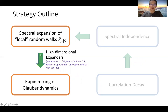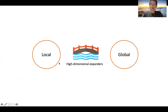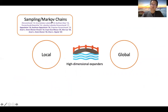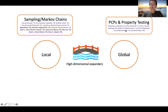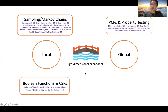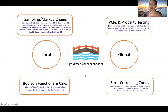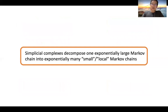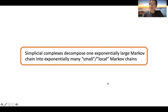High-dimensional expanders are objects exhibiting a local-to-global property useful for algorithm design and analysis: for analyzing Markov chains, sampling algorithms, PCPs, property testing, Boolean functions, constraint satisfaction problems, and error-correcting codes. The rough idea is that a simplicial complex is useful in decomposing a single exponentially large Markov chain — the Glauber dynamics — into exponentially many small local Markov chains. High-dimensional expanders and the simplicial complexes studied facilitate such a decomposition.